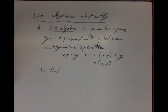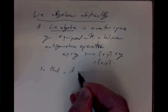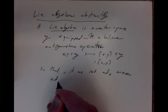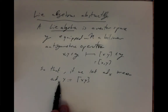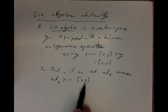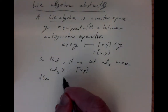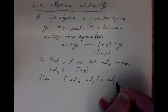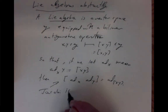There is one more feature, not at all obvious. If we let ad_x denote the linear operator defined by ad_x(y) = [x, y], then we require that [ad_x, ad_y] = ad_{[x,y]} for any x and y. This is called the Jacobi identity.